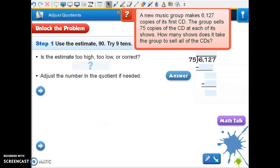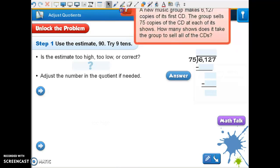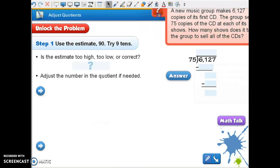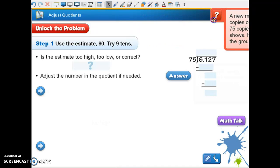So if we estimate that, we might estimate that to 6,300 divided by 70. Okay, and that's going to get us 90. So what they're telling you is you can take this 9. Now we know it's going to be over the number in the tens place.